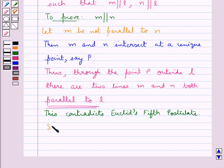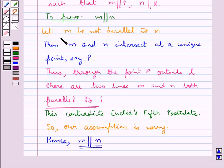So our assumption is wrong. Hence, we have that M is parallel to N. Since we had assumed M is not parallel to N and we have got that our assumption is wrong,